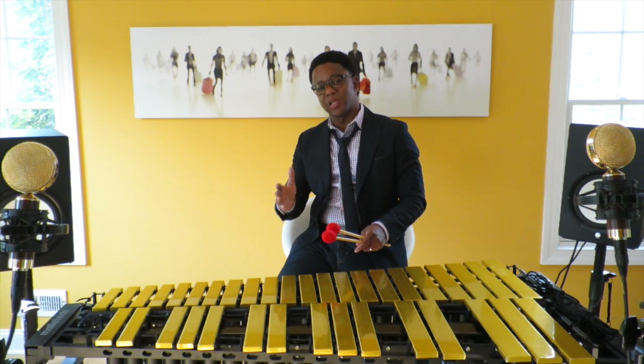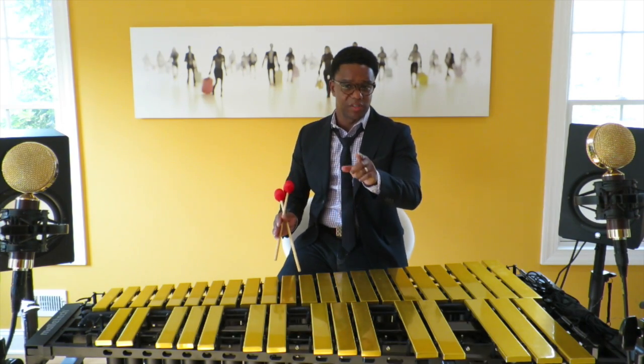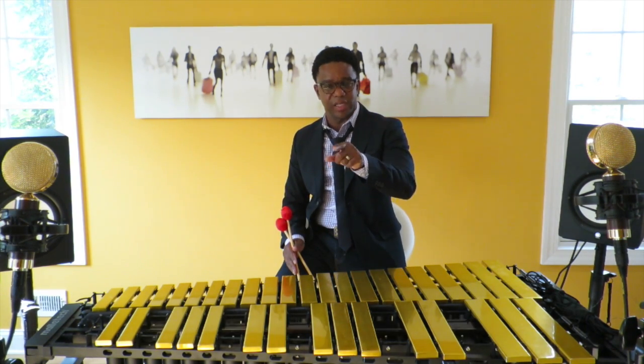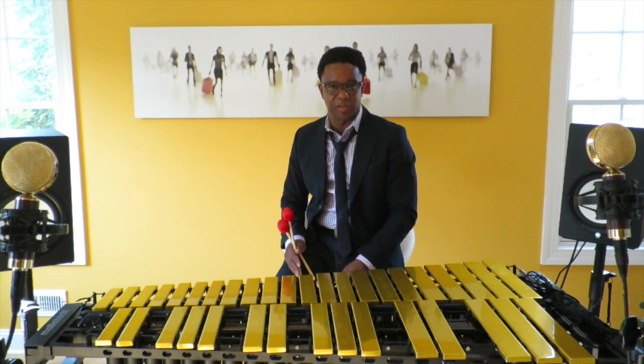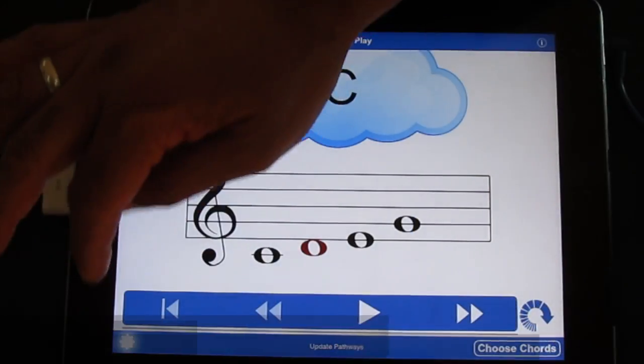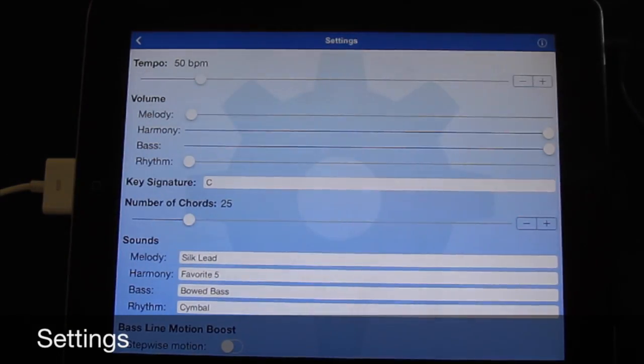So now we're basically all set to hit play and play along with the progression. Let's take a look at what we have here. We're going to start by taking a quick glance at the setting page. We have a tempo set at 50, which is fine. We have the melody sound turned all the way off. We have the harmony and the bass all the way up, and the rhythm sound turned all the way off. That's fine for right now.